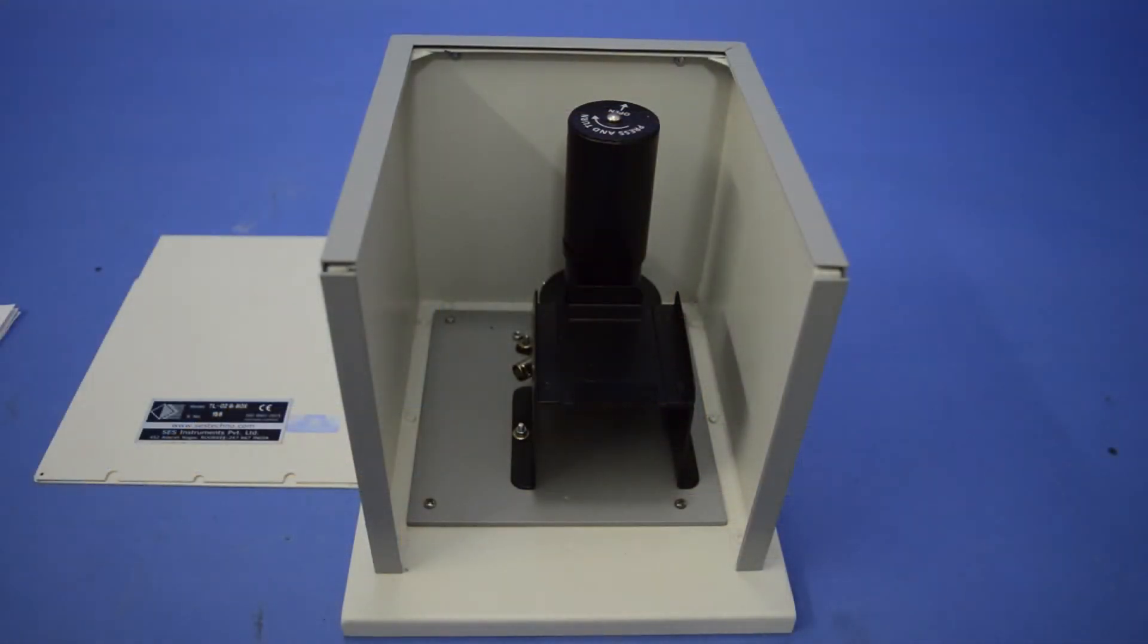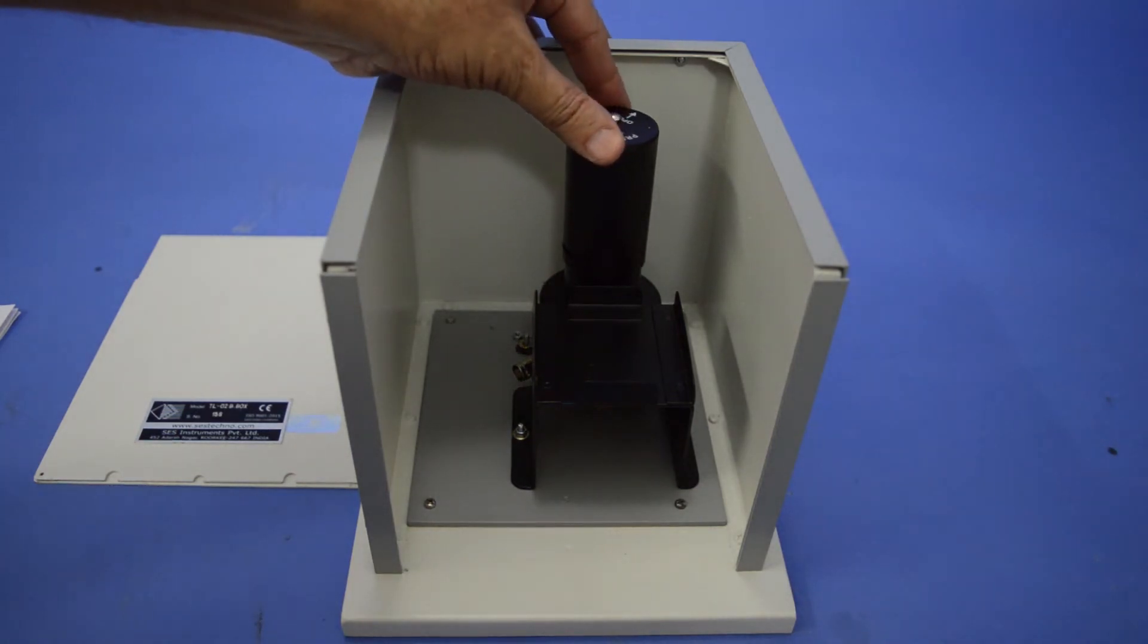To check the working of PMT cover lid, put slightly downward pressure and rotate clockwise and anti-clockwise to open and close the window position.